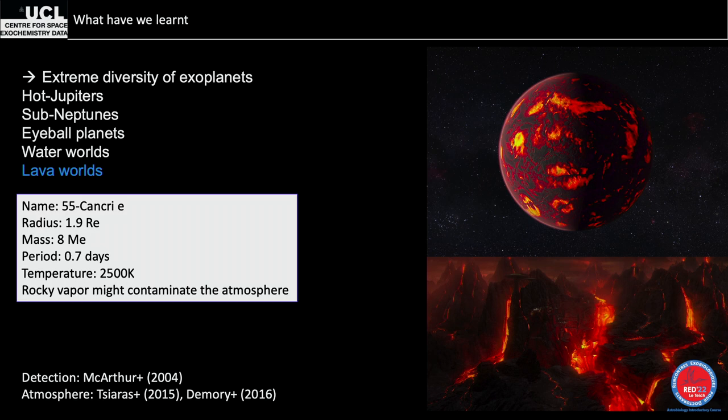55 Cancri e is a lava planet slightly larger than Earth, orbiting in just 0.7 days with a temperature of 2,500 K. On one side, temperatures are high enough to vaporize rocky surface material, creating a lava ocean whose vapor contaminates the atmosphere. If you observe such an atmosphere, you might find rocky elements like titanium or sodium. HCN has actually been detected, though another paper argues there's no atmosphere at all.